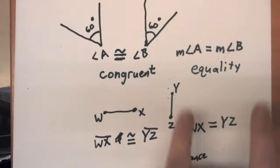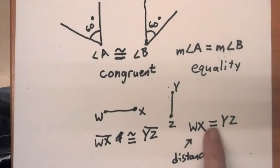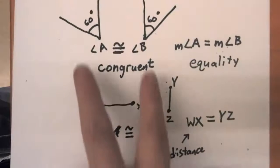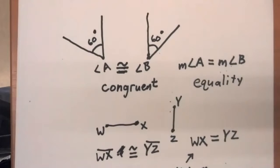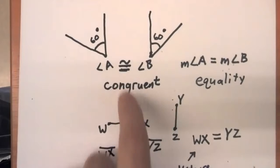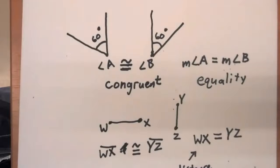When we're comparing two numbers and seeing that those two numbers are the same, we're going to use the equality symbol. When we want to say that two geometric objects have the same basic structure — which means distance for line segments, angle measures for angles, and shape and size for more complicated shapes — we'll use the congruent symbol and the word congruent.